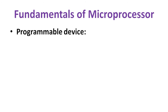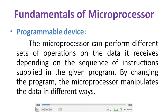What is meant by a programmable device? The microprocessor can perform different sets of operations on the data it receives depending on the sequence of instructions supplied in the given program. The processor receives an opcode or operational code — each instruction has a specific 8-bit code, and according to that 8-bit code the processor understands what type of operation it has to perform. Each operation has a unique code, and that unique code along with the data is called the instruction.